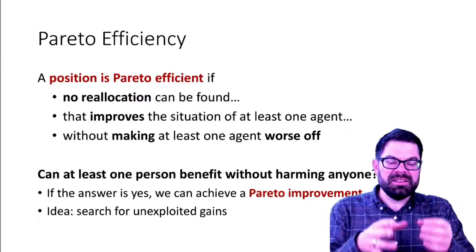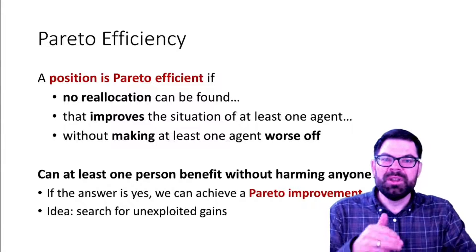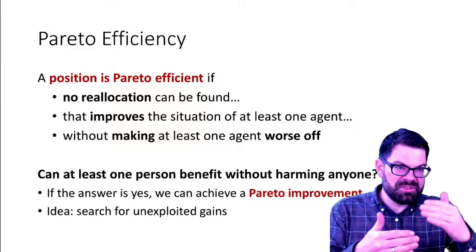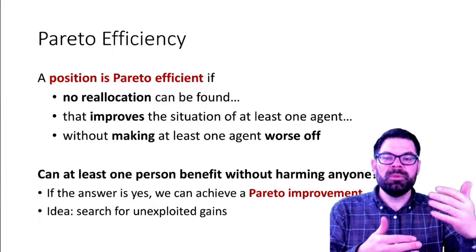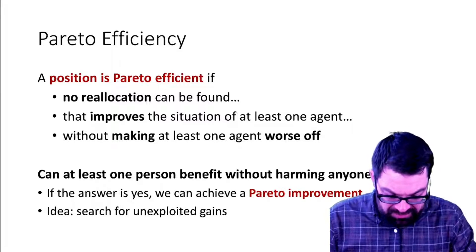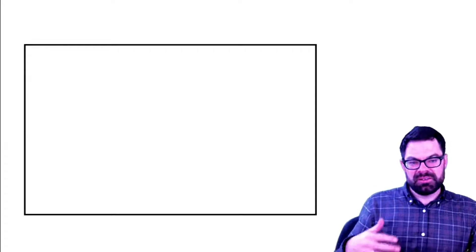At a point that is Pareto efficient, we can no longer do Pareto improvements. Because if we were to improve the situation of one person, we would make someone else worse off. Now, this all may sound very abstract, so let's look at this graphically.